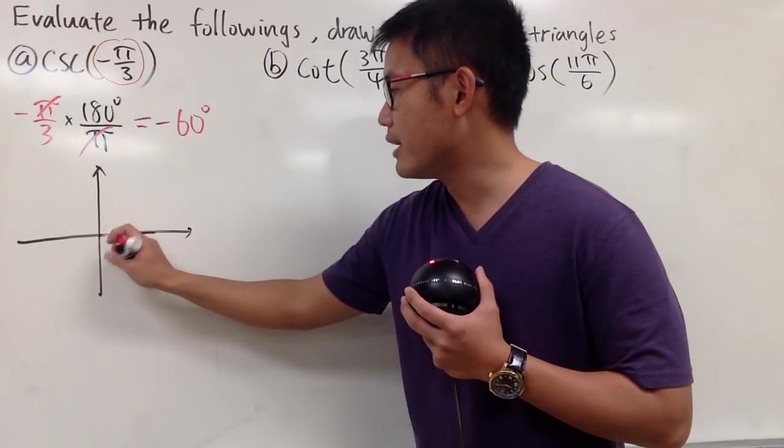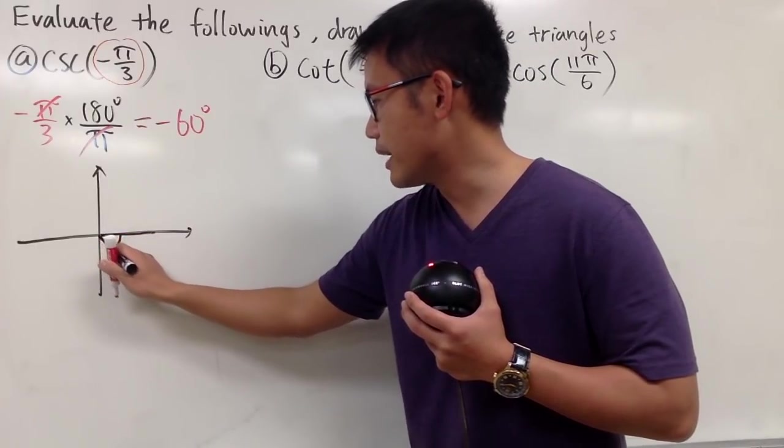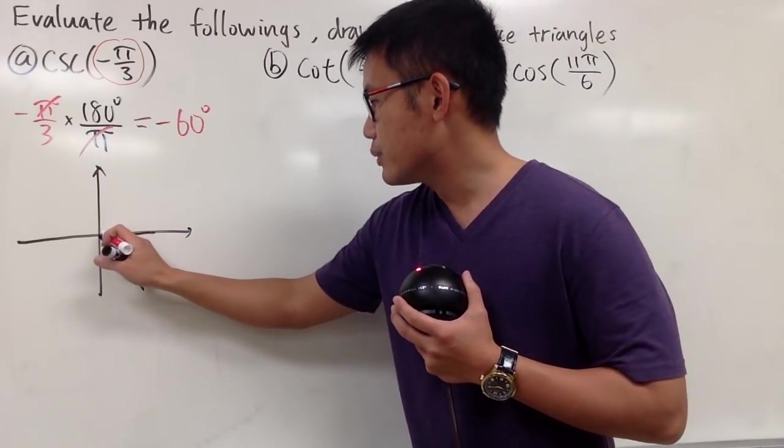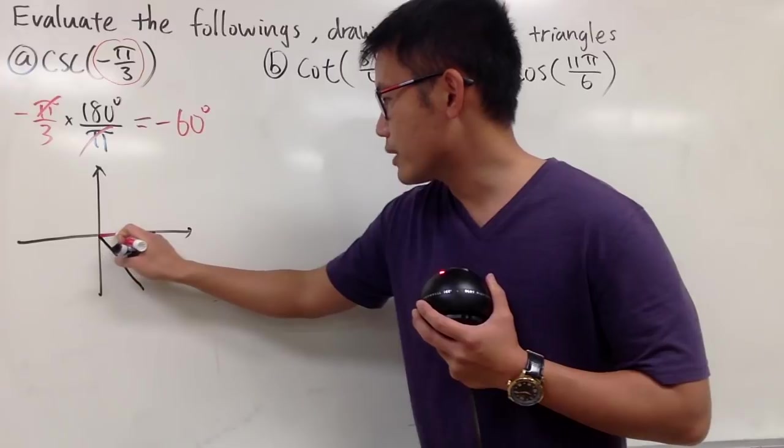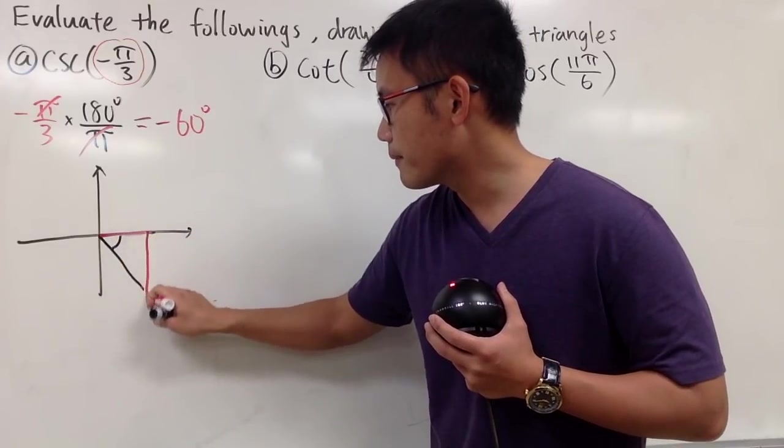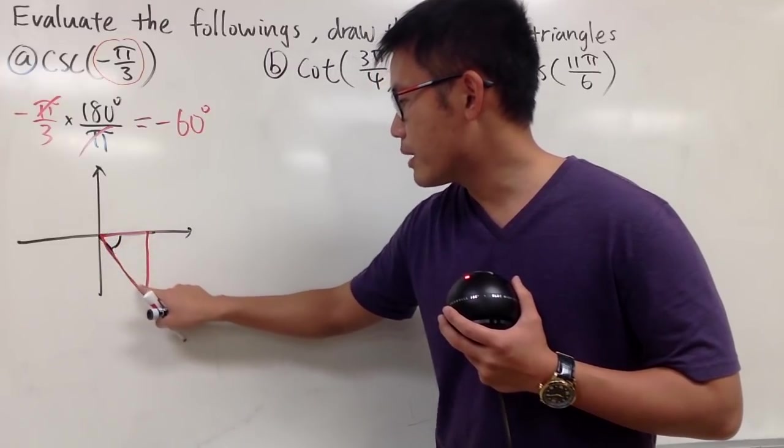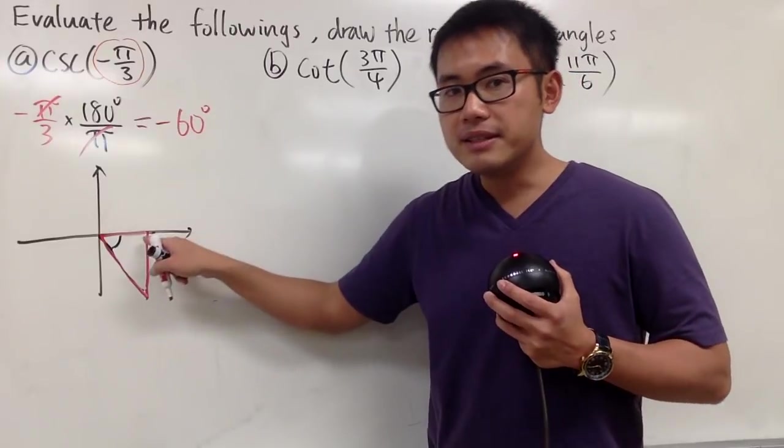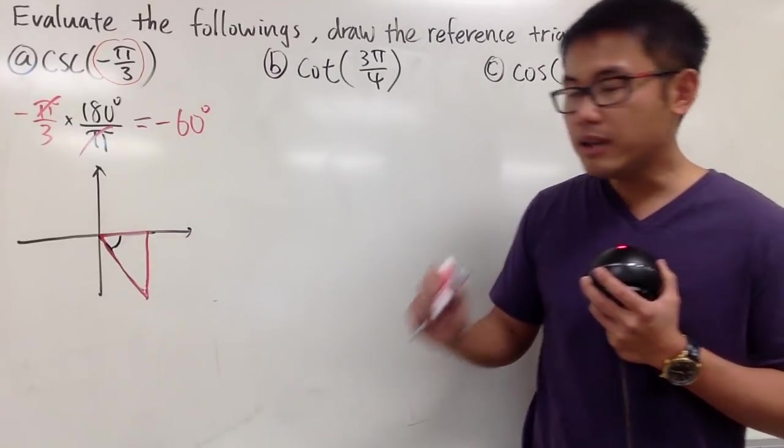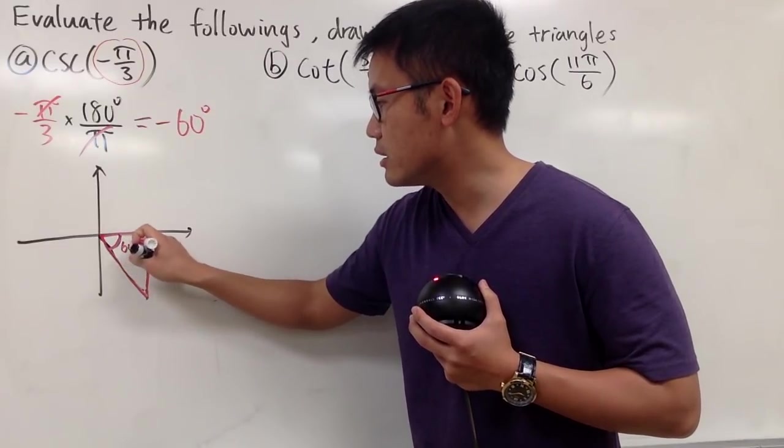I would just put in my reference triangle right here. Here is my original terminal side, and I would have to squeeze in a special right triangle like this. Remember, negative 60 degrees looks like this, but if you're talking about a reference angle, we'll just take this to be positive 60 degrees.